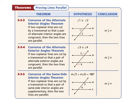We now have three converses of theorems. The converse of the alternate interior angles theorem says if you have two alternate interior angles that are congruent, then the lines are parallel. The converse of the alternate exterior angles theorem says if two alternate exterior angles are congruent, then the lines are parallel. The converse of the same side interior angles theorem says if two same side interior angles are supplementary, then the two lines are parallel.